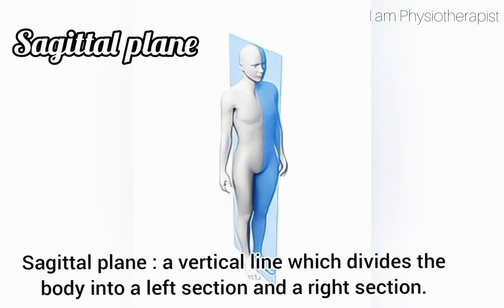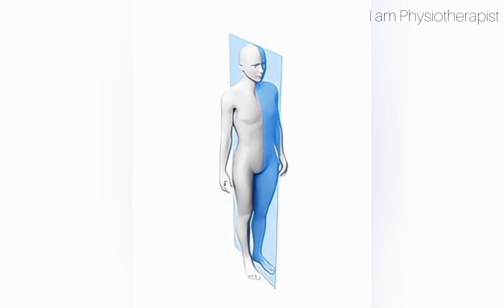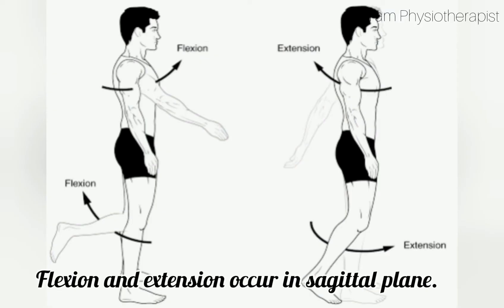Sagittal plane: a vertical line which divides the body into a left section and a right section. Flexion and extension occur in the sagittal plane.